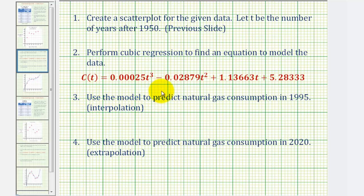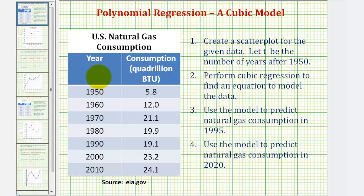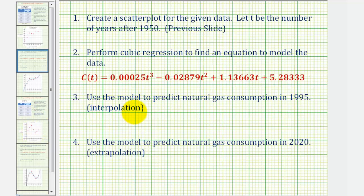So number three, we want to use the model to predict the natural gas consumption in 1995. And since 1995 is within the given data, meaning we were given data from 1950 to 2010, this prediction is actually called interpolation. And for the prediction for number four for 2020, since 2020 is outside the given data, this is called extrapolation. But either way, we need to find the value of T based upon the given year, and then substitute that value for T into the given function.